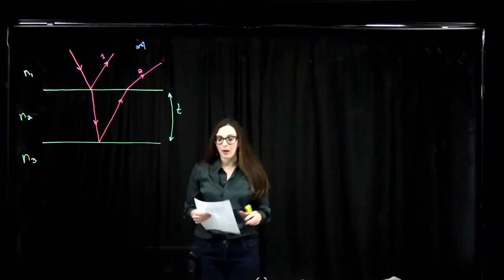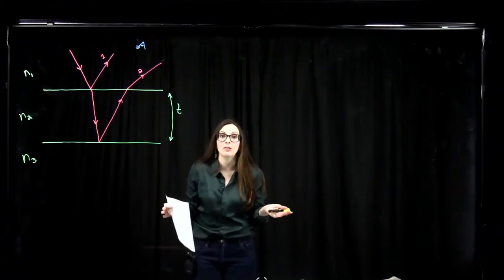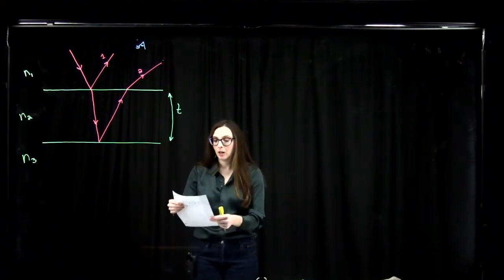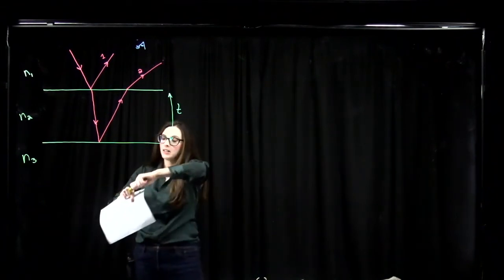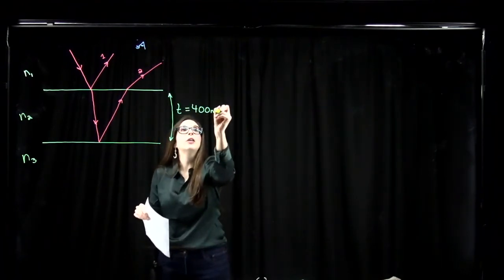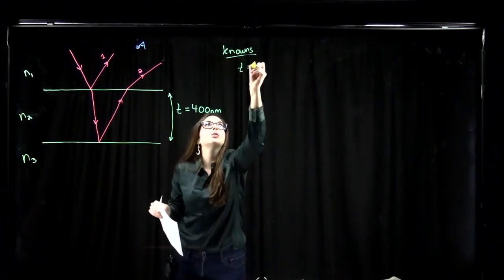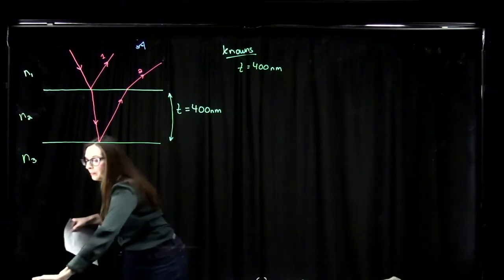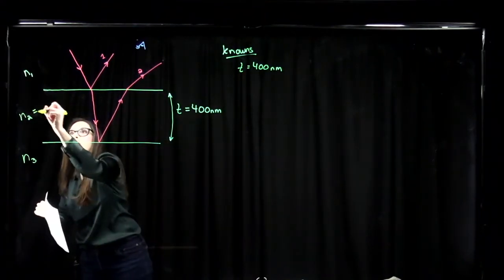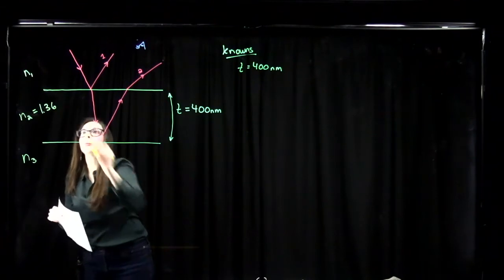We have another thin film example problem. We have a soap bubble floating in air. Soap bubbles are thin films sandwiched on either side by air, something with an index of refraction of 1. Our soap bubble has a thickness of 400 nanometers, so T equals 400 nanometers. The index of refraction of the soap bubble film — that's our thin film material — is 1.36.